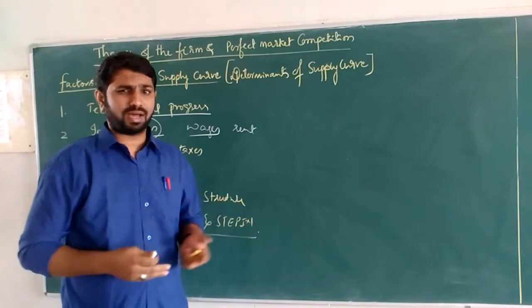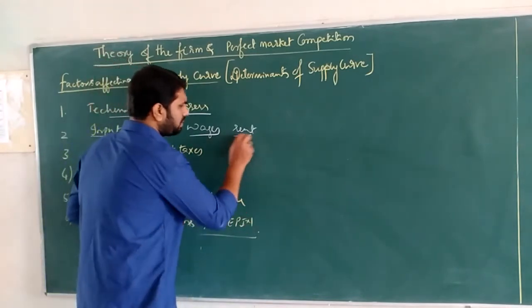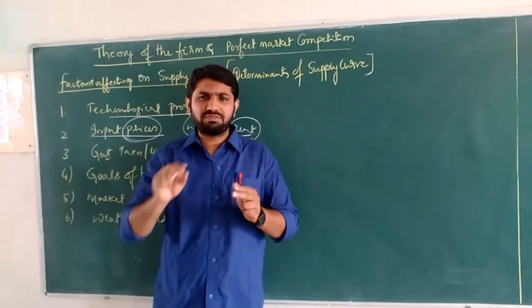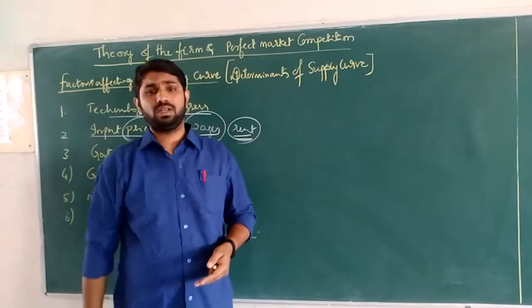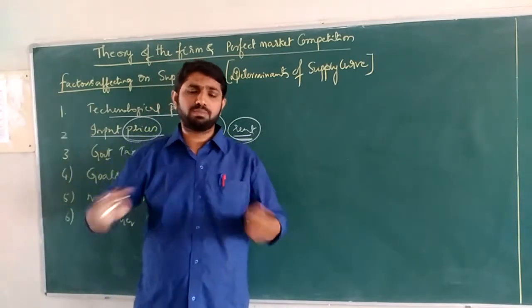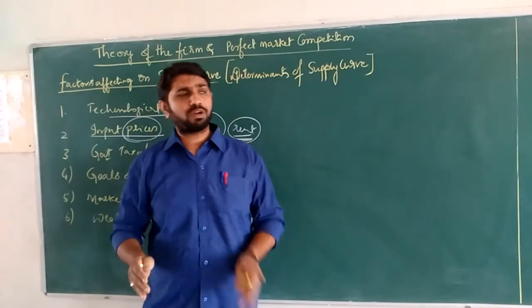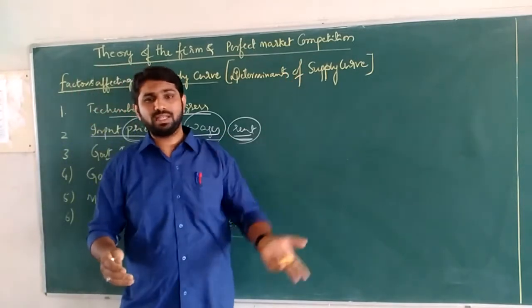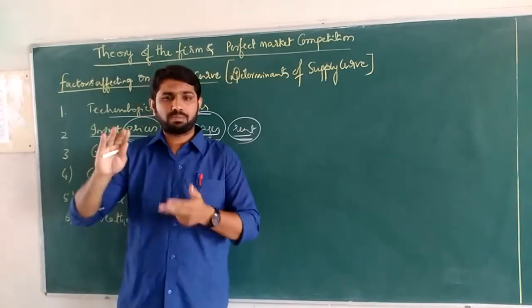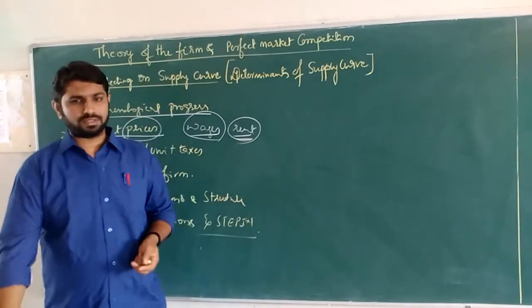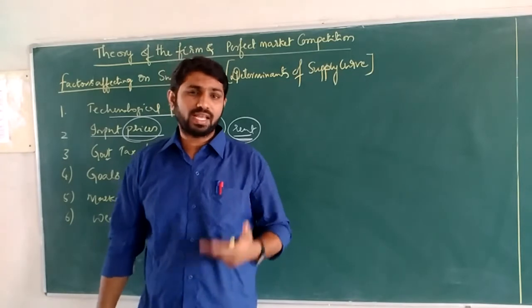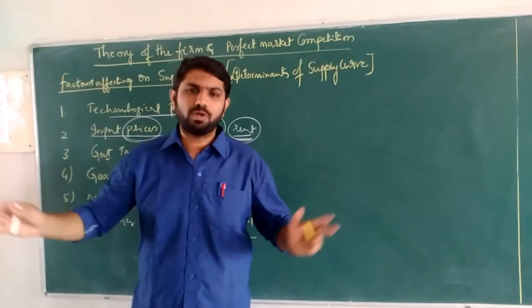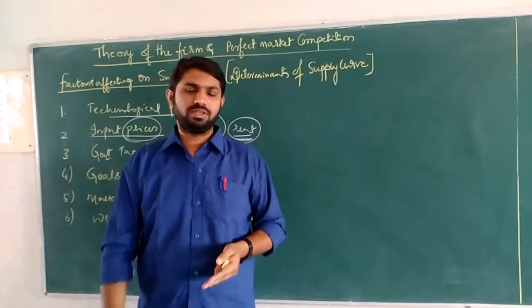Whatever labor and land are available in the market, the rent and wages we pay to buy the factors of production — if these costs are available at a lesser cost, then we can have more amount of sales and more profit. If cost increases — when labor cost, rent, and other costs increase — profit decreases, and the quantity of supply decreases.